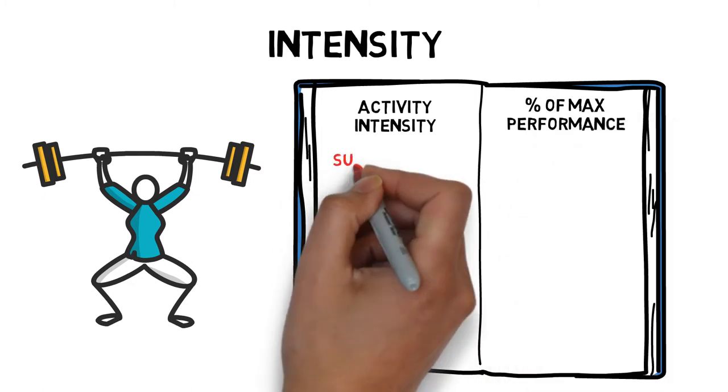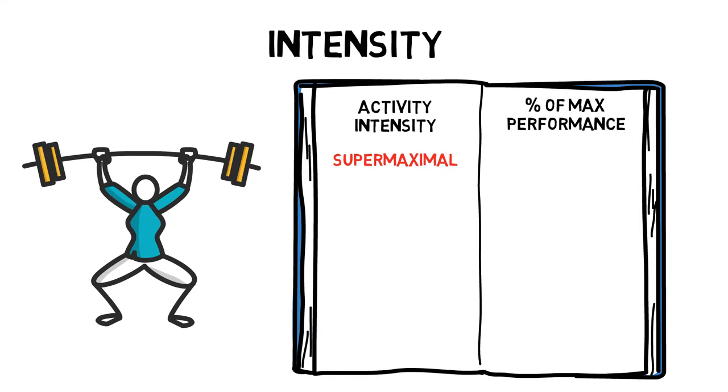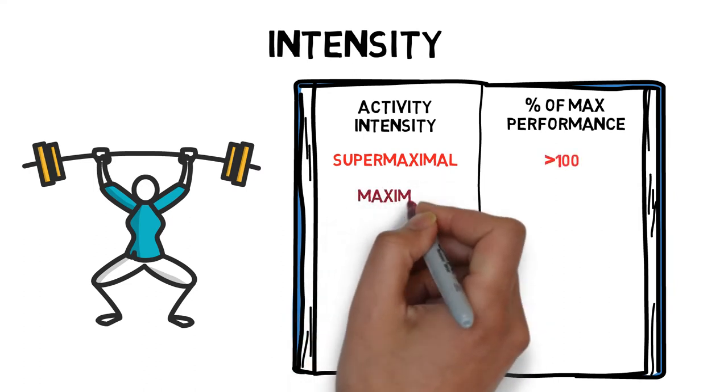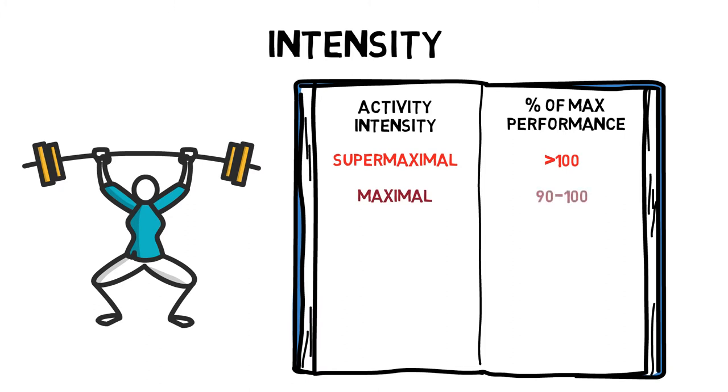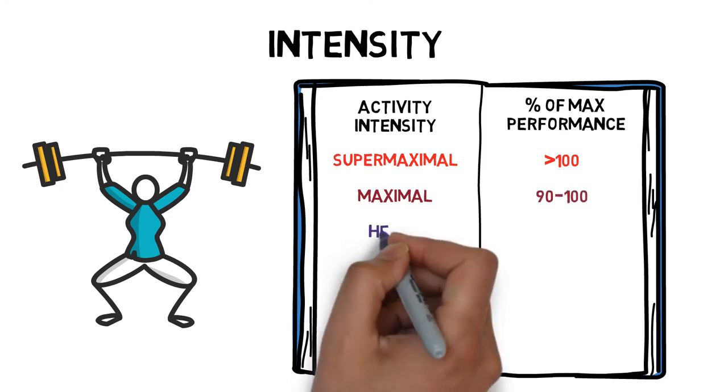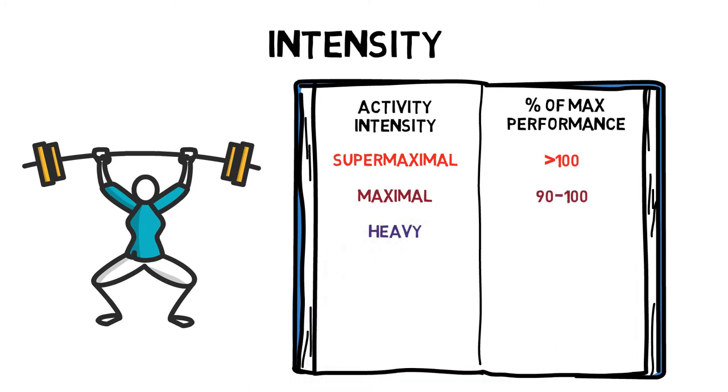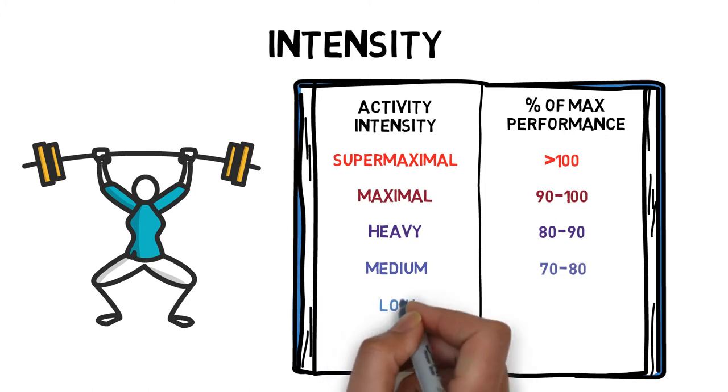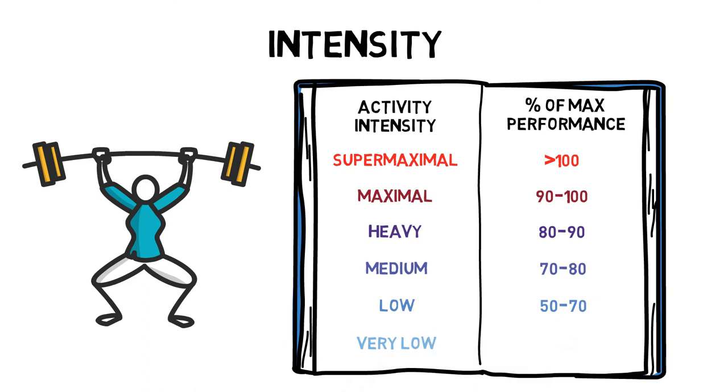Supermaximal intensity is anything over 100% of maximal performance. Maximal intensity is 90 to 100%. Heavy is 80 to 90%. Medium is 70 to 80%. Low is 50 to 70%. And very low, which is anything under 50%.